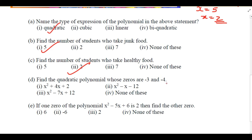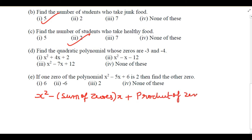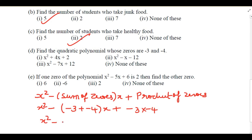Now find the quadratic polynomial whose zeros are -3 and -4. We know the general formula for a quadratic polynomial when zeros are given: x² - (sum of zeros)·x + (product of zeros). Sum of zeros = (-3) + (-4) = -7, so we write x² - (-7)x. Product of zeros = (-3) × (-4) = 12.